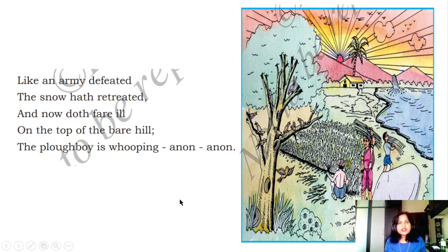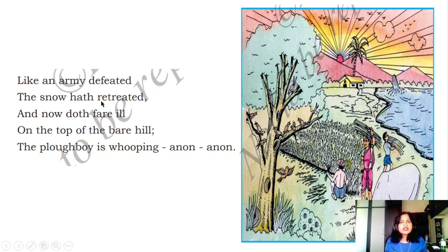Like an army defeated, the snow hath retreated — 'hath' means 'has', so the snow has retreated. That means no green is everywhere, only snow is there. Like when an army is defeated, their faces are down — like that, the weather is down now during winter.